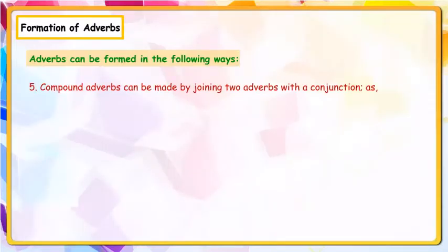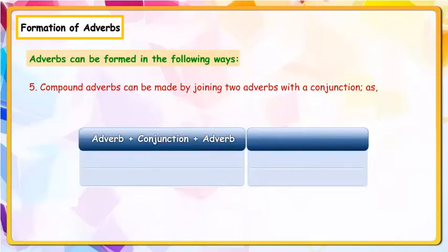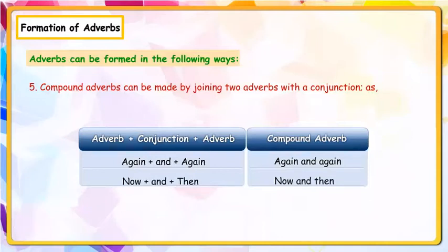Compound adverbs can be made by joining two adverbs with a conjunction: Adverb + conjunction + adverb = compound adverbs. Again + and + again = again and again; Now + and + then = now and then.